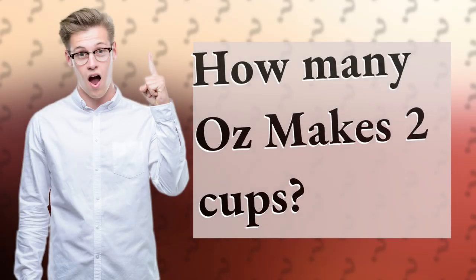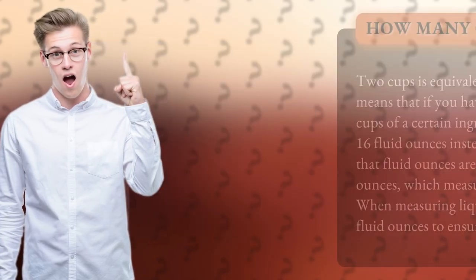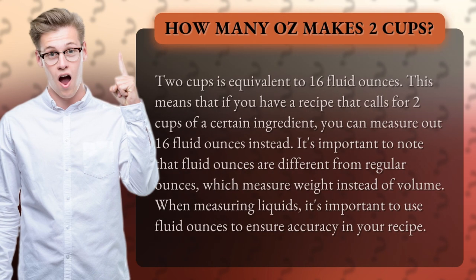How many ounces makes two cups? Two cups is equivalent to 16 fluid ounces. This means that if you have a recipe that calls for two cups of a certain ingredient, you can measure out 16 fluid ounces instead.